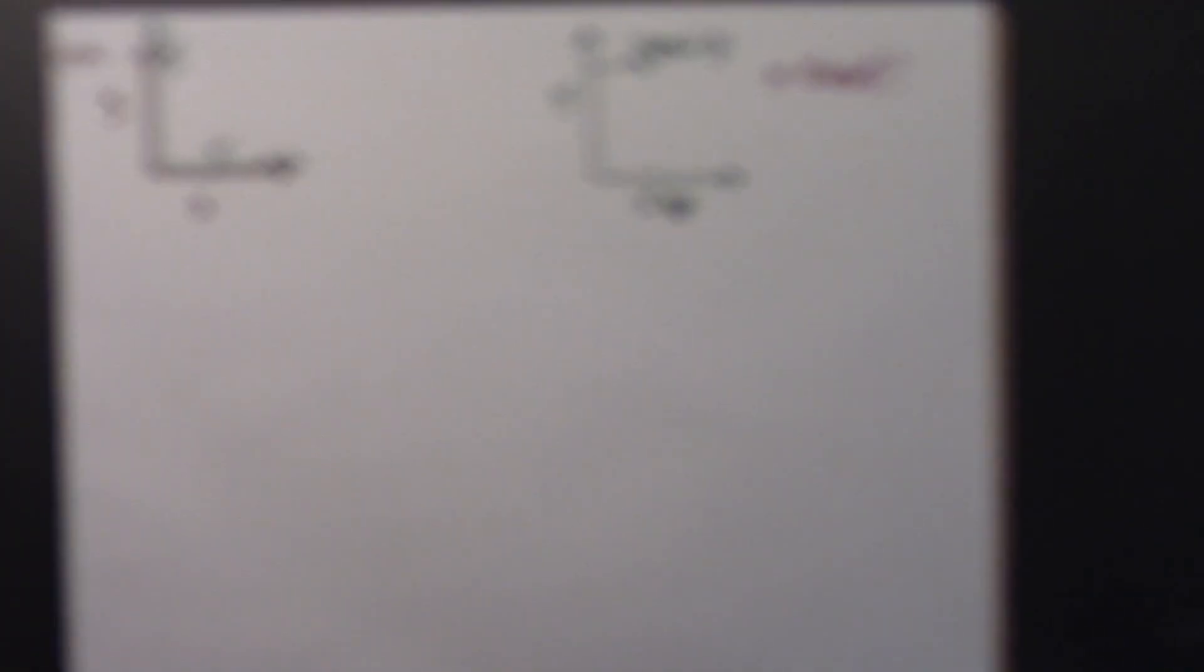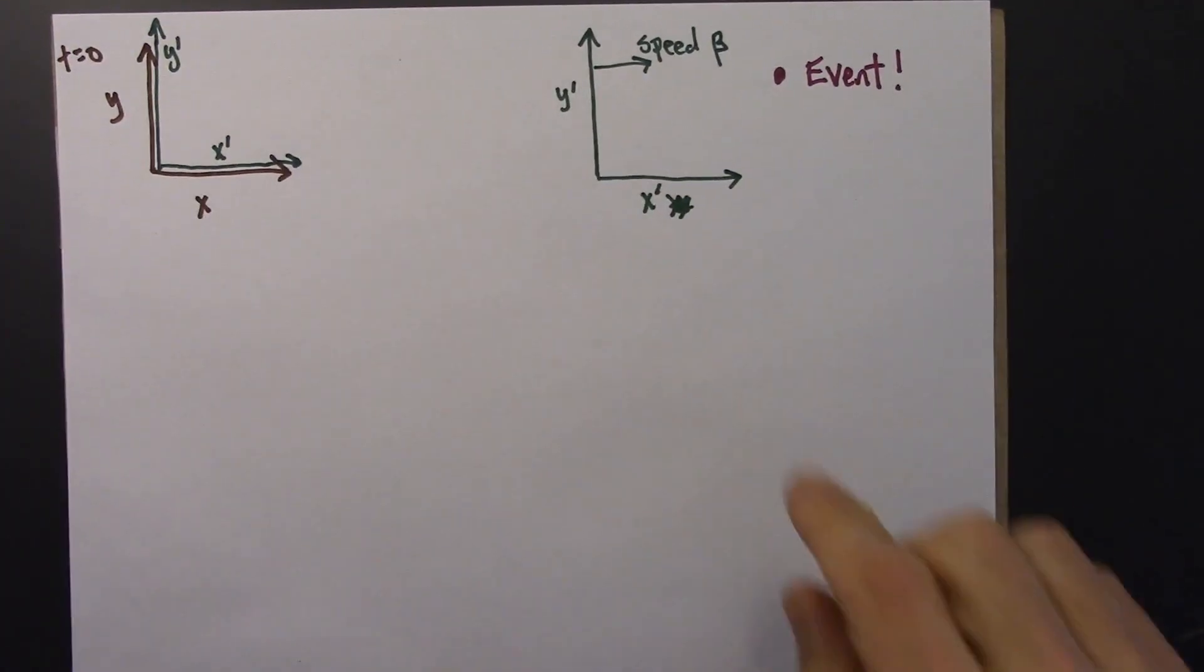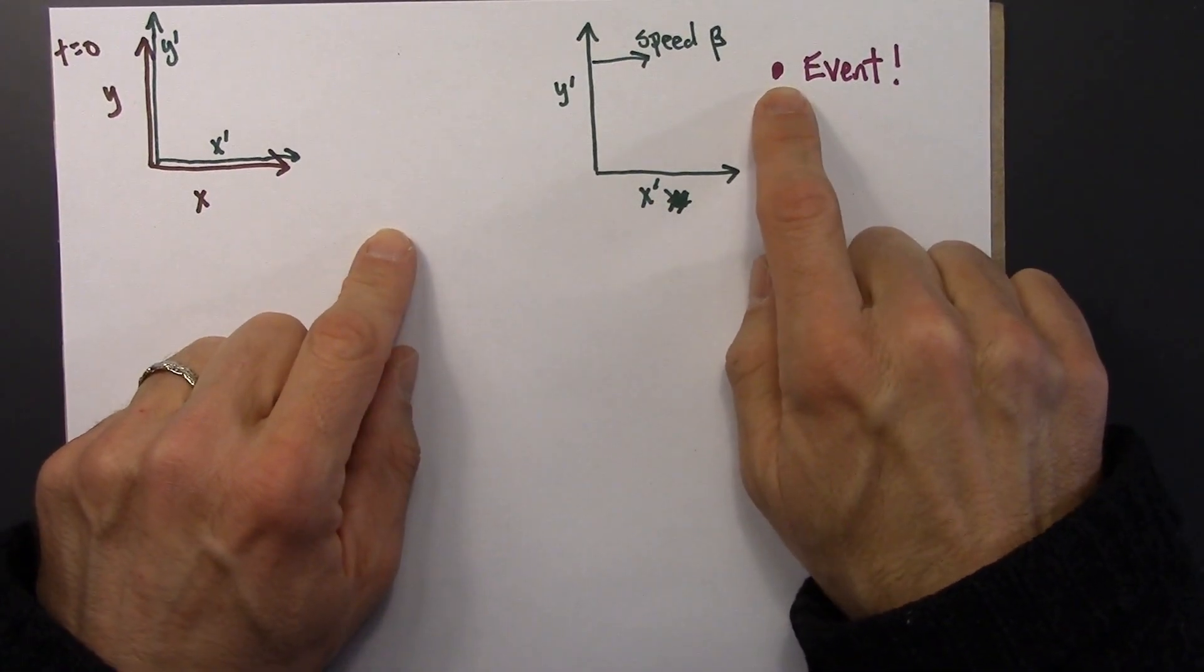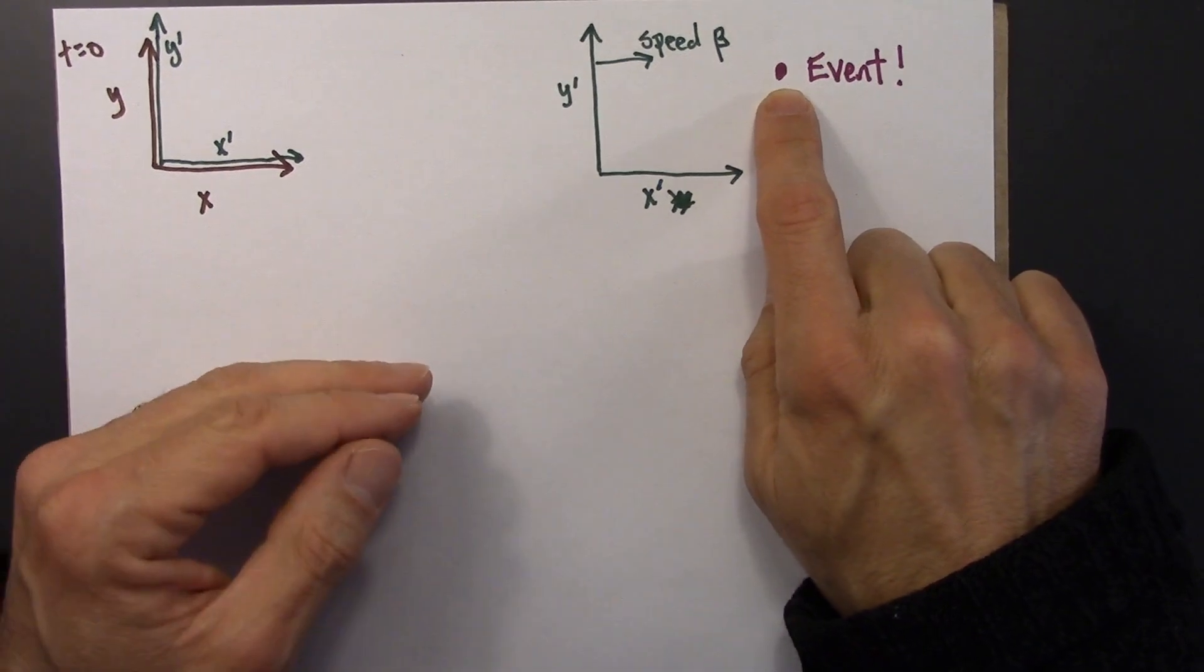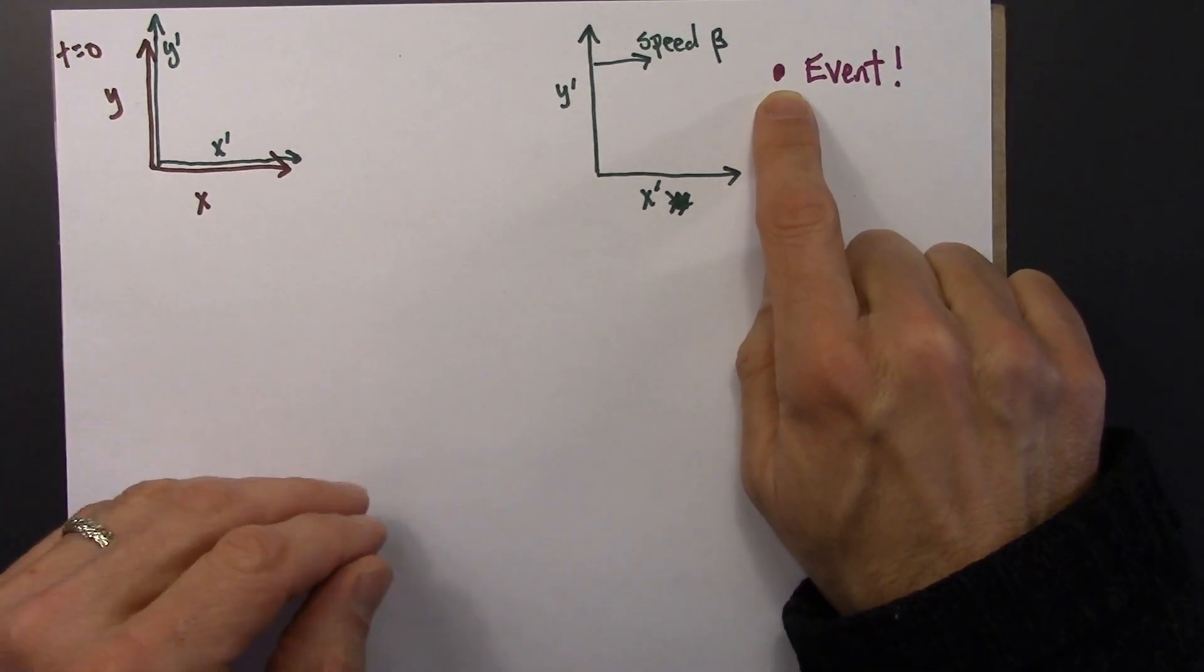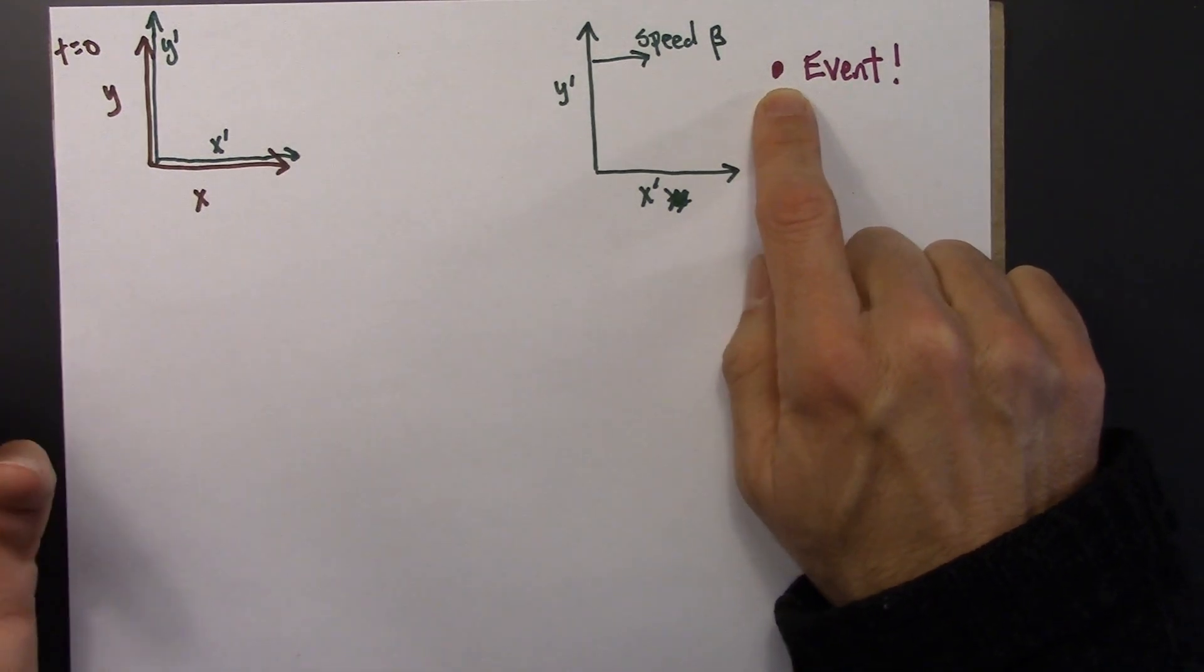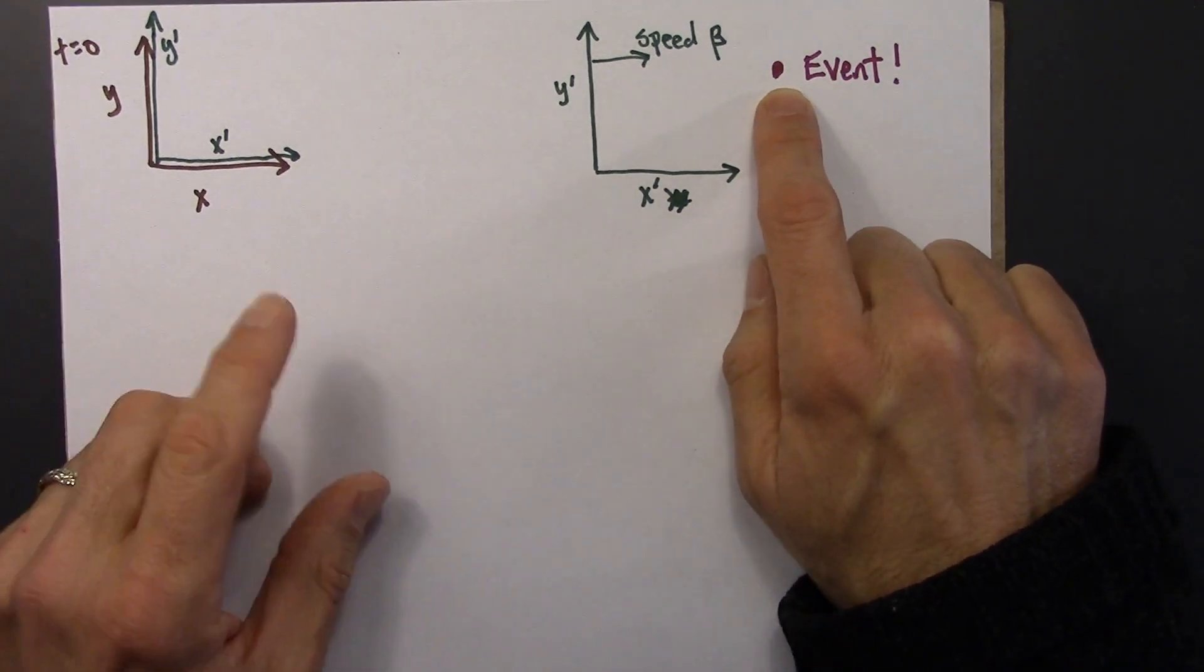So the first thing we're going to need to do is think about the time. What's the time for this event? Are they going to agree on the time? So in Newtonian relativity, in Galilean relativity, the answer is yes. Time is time. Everybody agrees on what time something happens in this Newtonian picture.